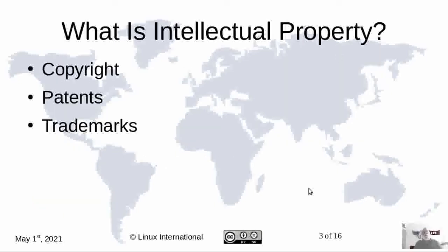First, we're going to talk about what intellectual property is. Intellectual property is a concept of a person's ideas and the ideas that they come up with. It's covered by three main points in U.S. law. I'm going to talk about U.S. law because that's the one I know the most about. However, U.S. law has been reflected in a series of other laws in other countries around the world — it may not be exactly the same, but it's close. So copyright, patents, and trademarks are the three things we're going to be talking about.